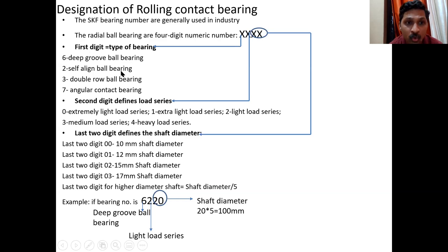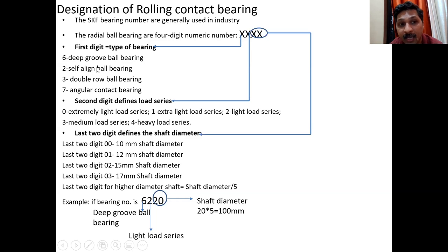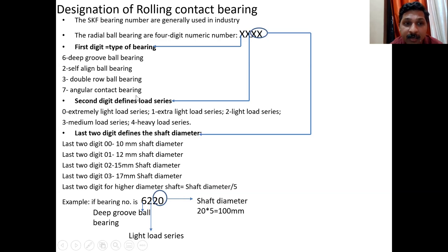If the first digit is 2, the bearing is a self-aligned ball bearing. If the first digit is 3, the bearing is defined as a double-row ball bearing. If the first digit is 7, the bearing is an angular contact type bearing, which is used for thrust loading.